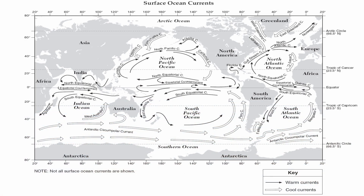Now this map doesn't only tell you about ocean currents, it tells you a little bit about latitude and longitude. Numbers along the sides on the left and right, those are latitude, the equator being the main latitude line. Numbers along the top and the bottom, those are your longitude values.